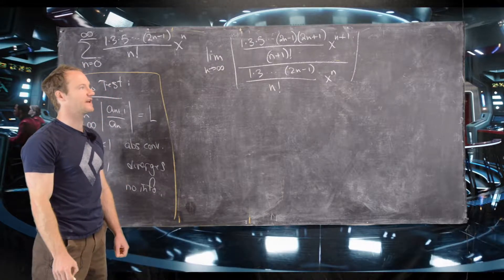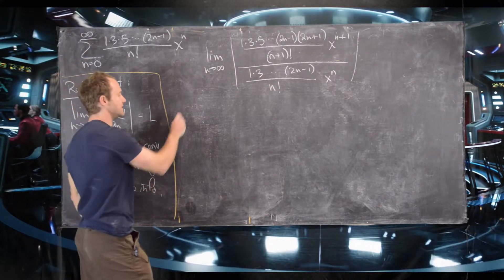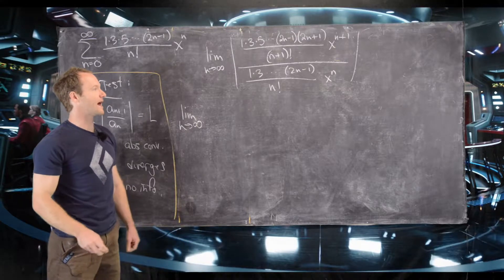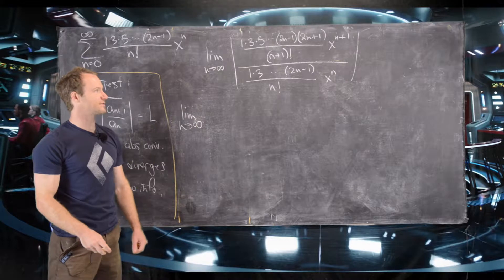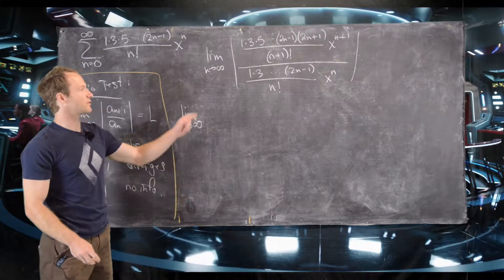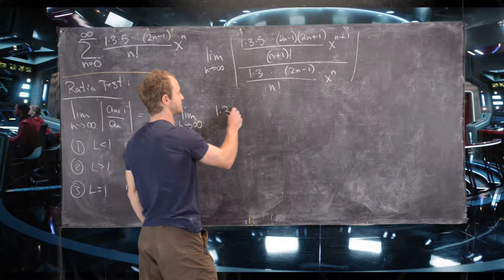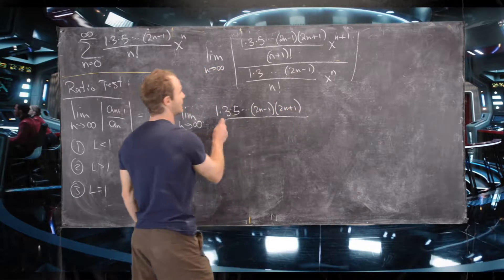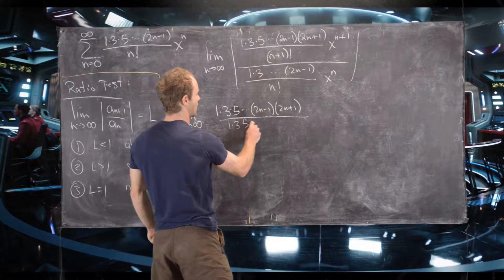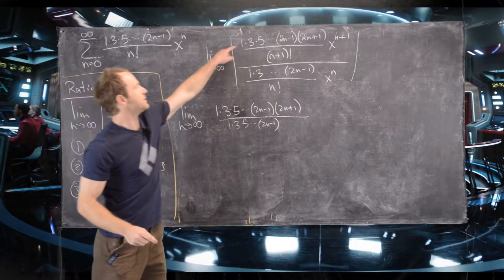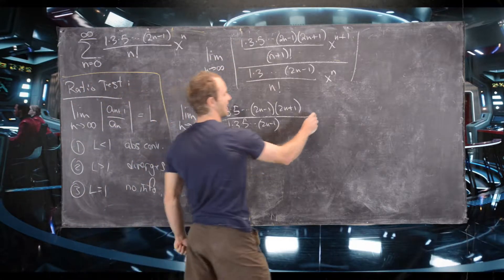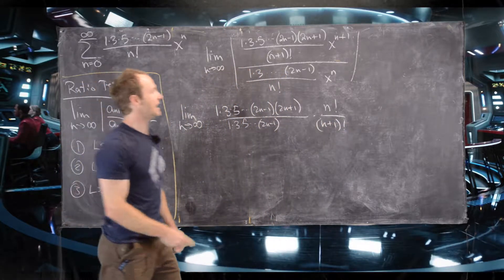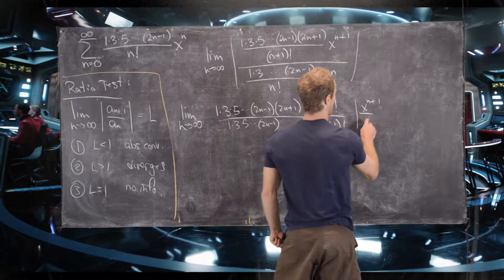The absolute value only matters for the x term. We rewrite the limit so that compatible terms are divided by each other: the rising products of odd numbers and the factorials. So we get 1 times 3 times 5 up to 2n plus 1 over 1 times 3 times 5 up to 2n minus 1, then n factorial over n plus 1 factorial, and finally x to the n plus 1 over x to the n.